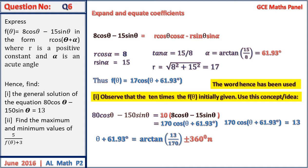This equals arccos(13/170) ± 360°n, where n is a natural number, and our θ will be equal to this value.